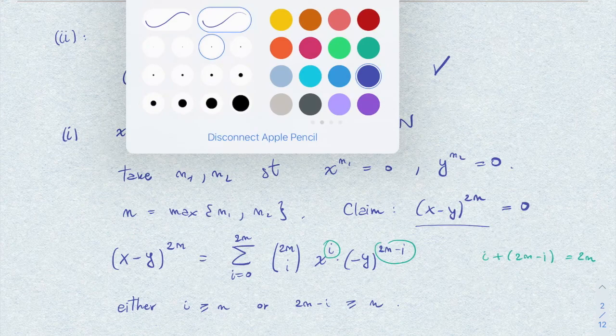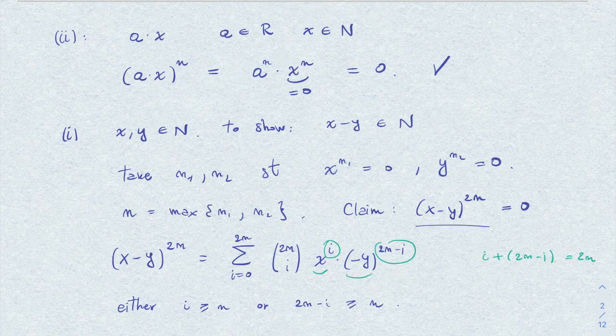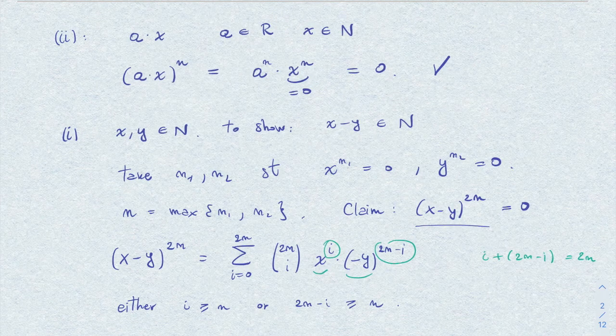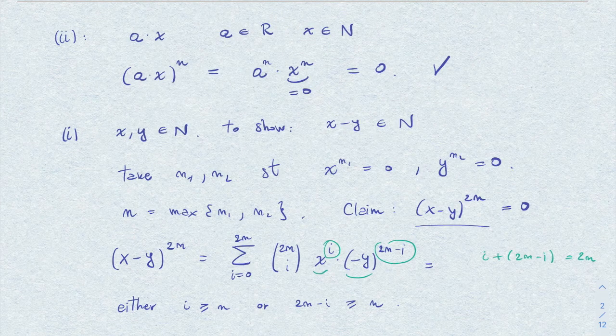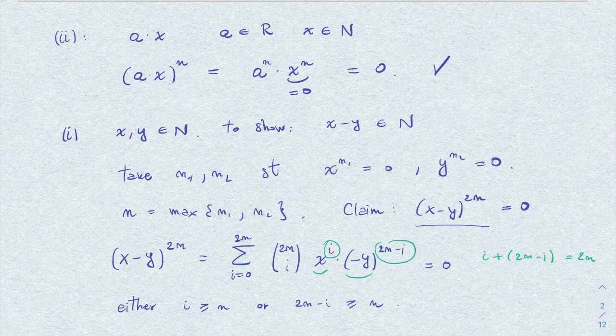Therefore, either x to the i or y to the (2n minus i) will equal zero, so this expression will always equal zero. This concludes our check.